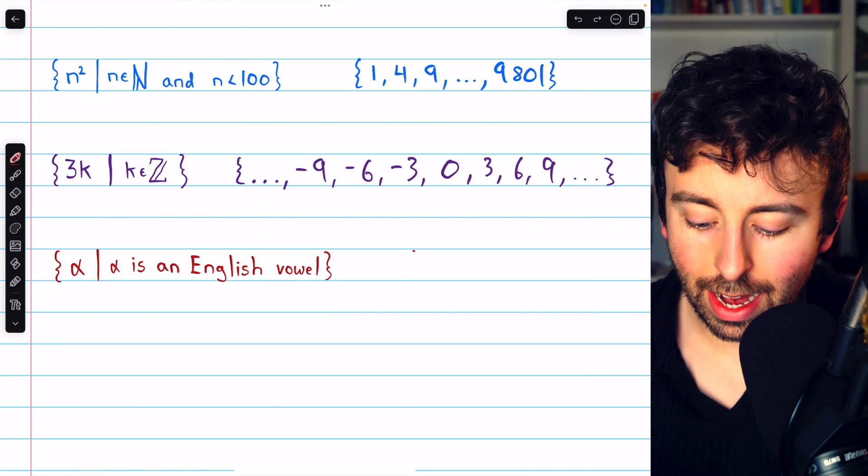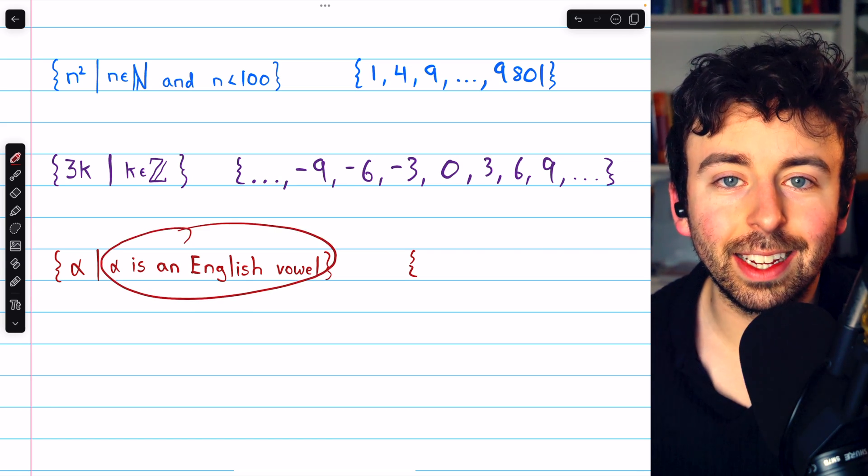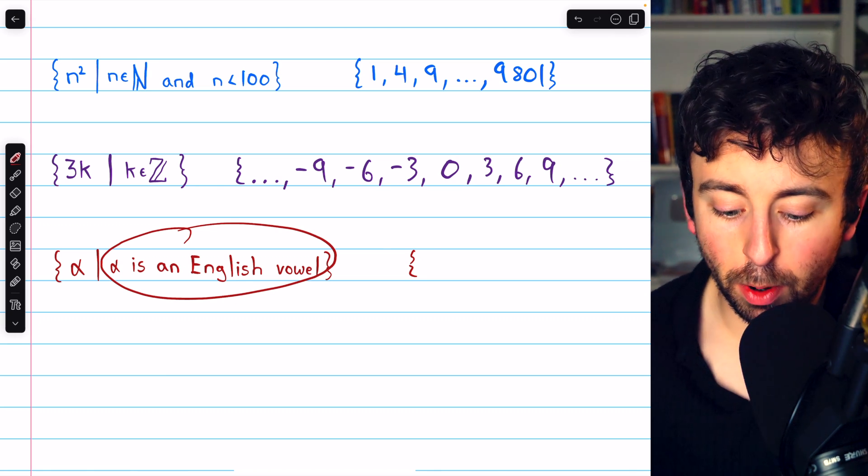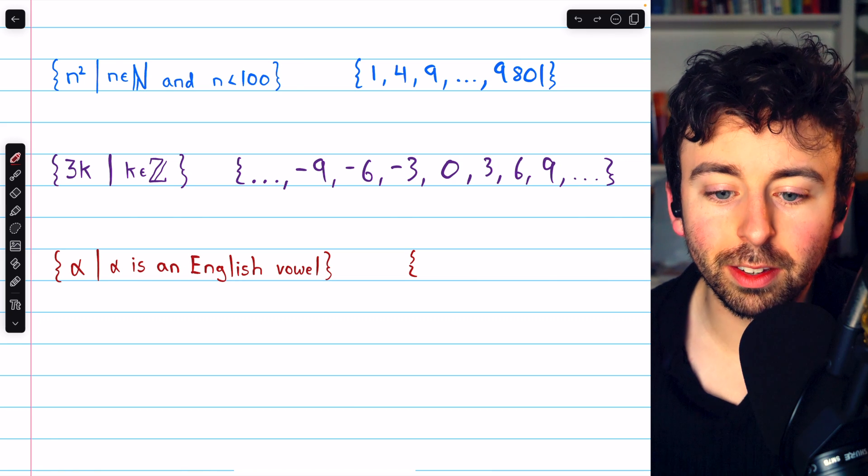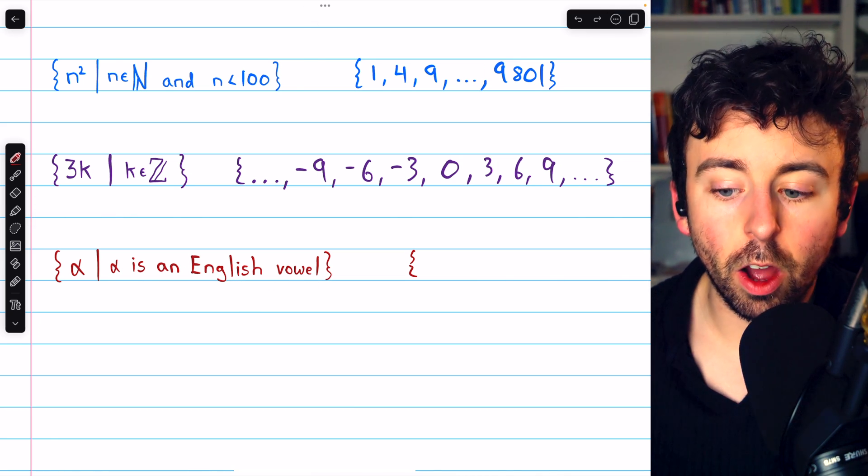Our final example is the set containing all characters alpha, where alpha is an English vowel. So this is just a non-mathy example, which is perfectly fine. Set builder notation is useful for describing all sorts of things. The English vowels are A, E, I, O, and U.